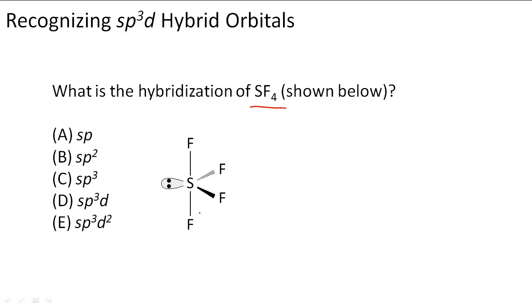So we have S and then the Fs that surround it and a lone pair. We have one lone pair, four bonds.